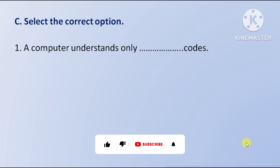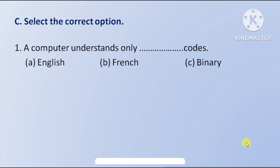See select the correct option. First question: a computer understands only which codes — option A English, option B French, option C binary. The right answer is option C, binary.